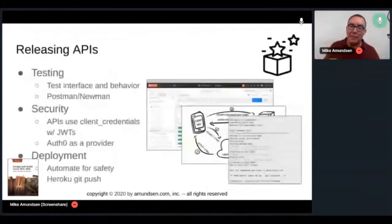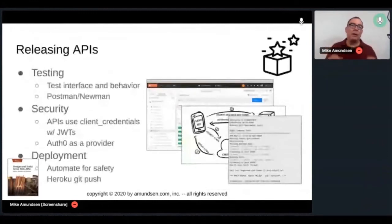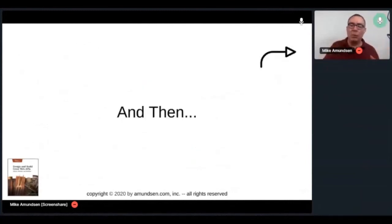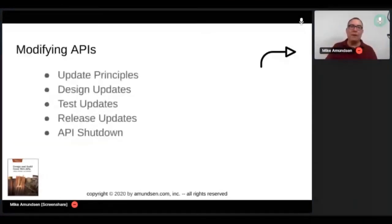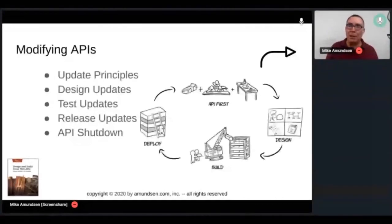Okay, so test your interface and behavior using Newman and Postman. Test your security using client credentials with tokens. And automate your deployment using something like Git push or something else. So we've talked about the key elements. We have a foundation. We do design. We do build release. What's the last thing? You're going to have to modify this API. You're going to modify it over and over and over.